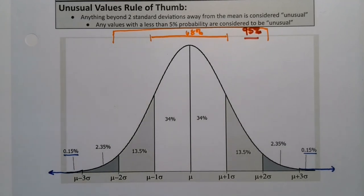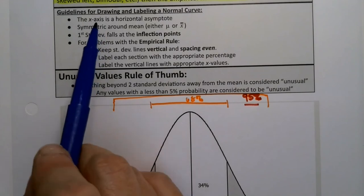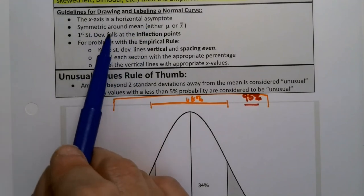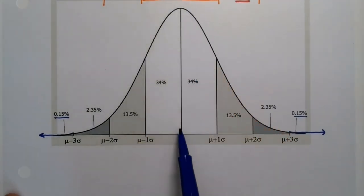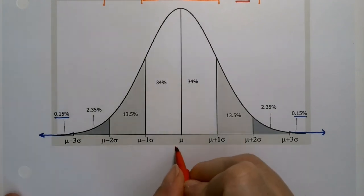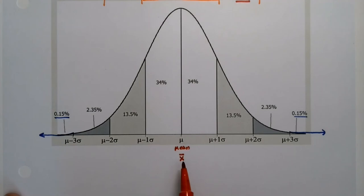Now we are going to have occasion, especially in chapter seven and beyond, to draw a normal curve and kind of know visually where things are. So let's talk about the attributes about a normal curve. Number one, the x-axis is a horizontal asymptote and it's symmetric about the mean. So symmetric about the mean, look right here in the middle, that middle line, that's the mean. So right here is the mean.